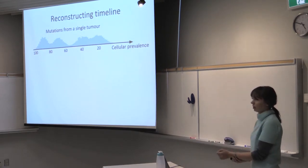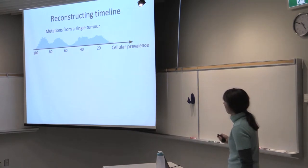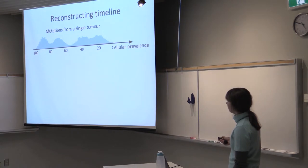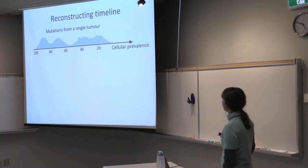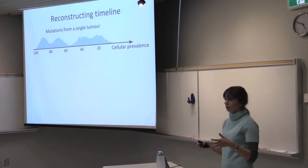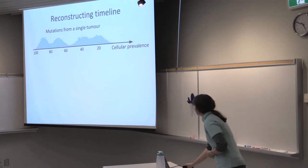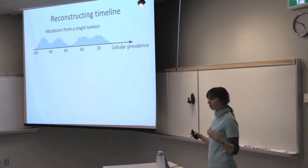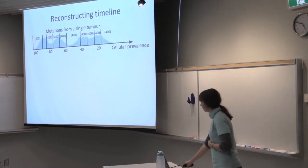So now let me describe how we infer the signatures over time. We take mutations from a single tumor, and then we sort them in decreasing order by cellular prevalence. And note that in some methods for detecting cancer subclones, we are looking at the density of cellular prevalence. But we are not doing this here. We'll be looking only at mutation counts. So we take this sequence of mutations sorted by cellular prevalence and separate them into equal bins of 400 mutations and consider each bin to be one time point.